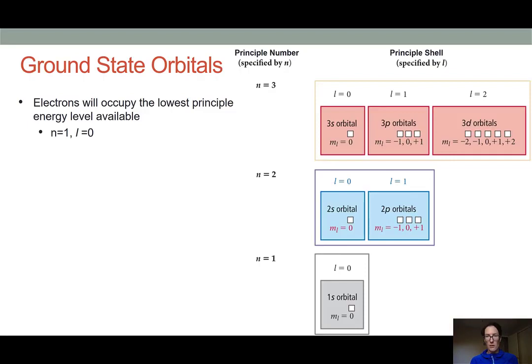So an atom is most stable again when its electrons are at its lowest possible energy level. And from what you learned in previous videos on the quantum mechanical model, you'll know that the lowest energy level available to an electron is when its principal number n is equal to one and its principal shell l is equal to zero. So this is the state in which the electrons occupy a space that is spherical in nature surrounding the nucleus of the atom and quite close in.